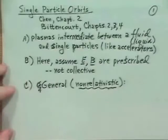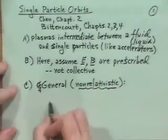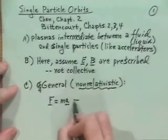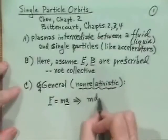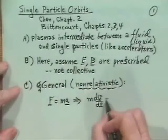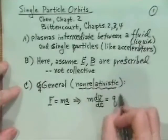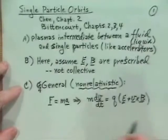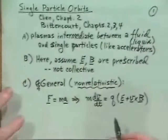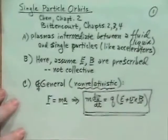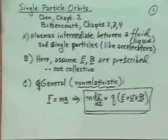In general, our equation of motion non-relativistically is just F equals MA — good old Newton's law — which we most often write as mass times acceleration equals the Lorentz force, which is Q times (E plus V cross B). This is fundamentally the equation we've got to determine and calculate various particle orbits from.